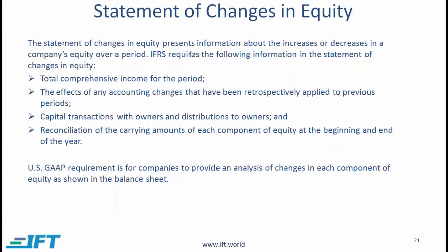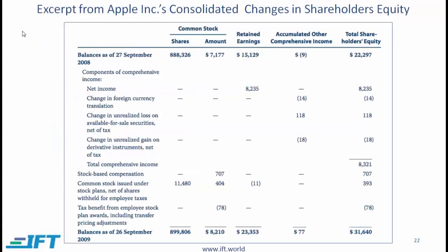The statement of changes in equity presents information about the increases or decreases in a company's equity over a period. IFRS requires specific information in this statement. US GAAP requires companies to provide an analysis of changes in each component of equity as shown in the balance sheet. To understand this, let's look at an excerpt from Apple's consolidated changes in shareholders' equity. You don't need to understand every detail here, but you should try to get the main point. This first row represents the start of the period.